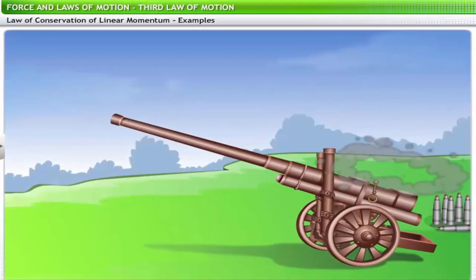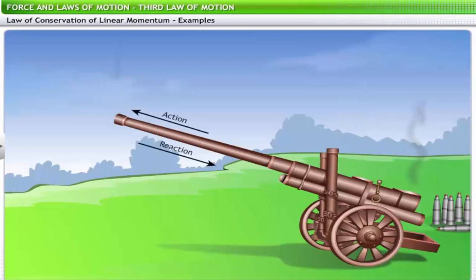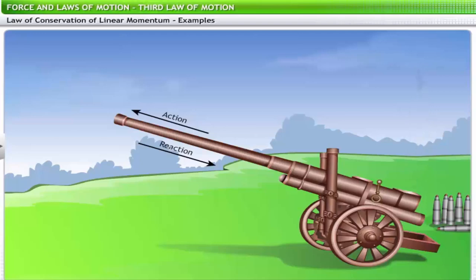Similarly, consider the example of a cannon. When a cannon is fired, the cannon ball shoots off with very high velocity. Since the force exerted by the cannon on the cannon ball equals the force exerted by the cannon ball on the cannon, the cannon is pushed back in recoil. If the wings of the cannon are not locked, the momentum due to recoil makes the cannon roll backwards.